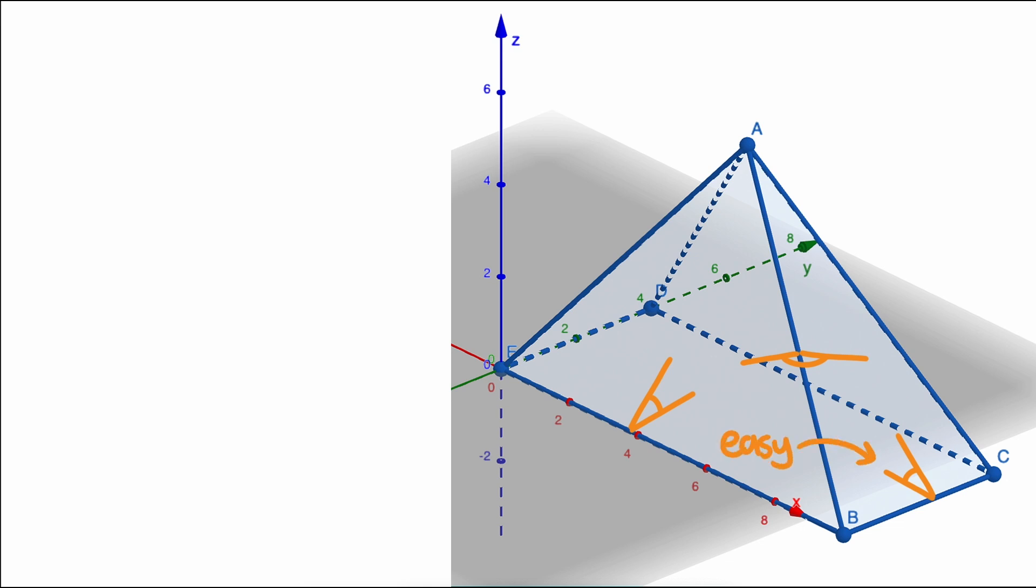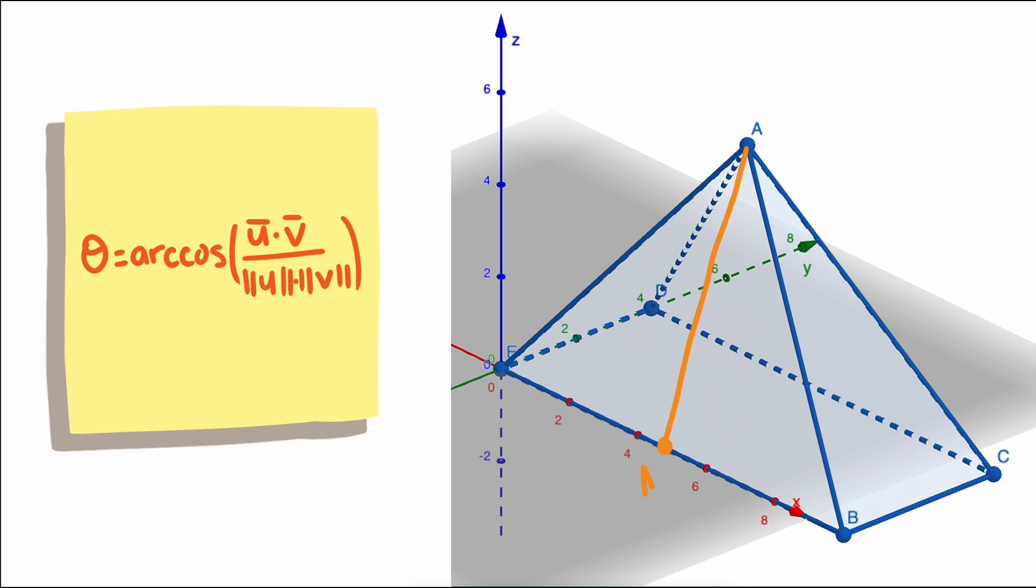Now these two angles will be easy. We'll use this formula. So for angle AMJ, we need to know vectors MA and MJ as well as their lengths.